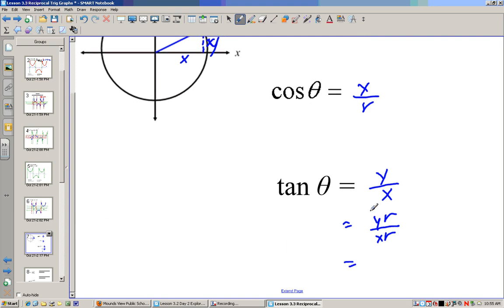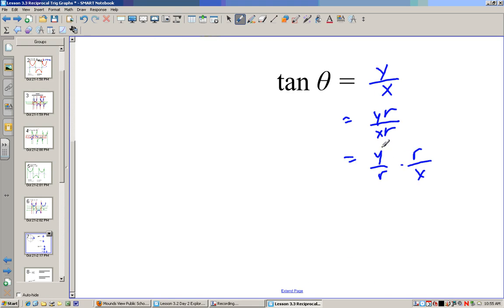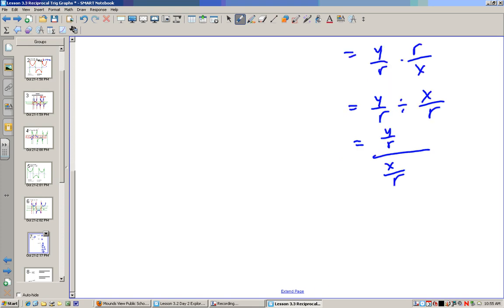And y over r would also be equivalent to the previous statement, which also tells us that y over r times r over x would be equivalent to the step above. And y over r divided by x over r would also be equivalent to the previous statement, which is the same thing as y over r divided by x over r. That's just another way of writing it.